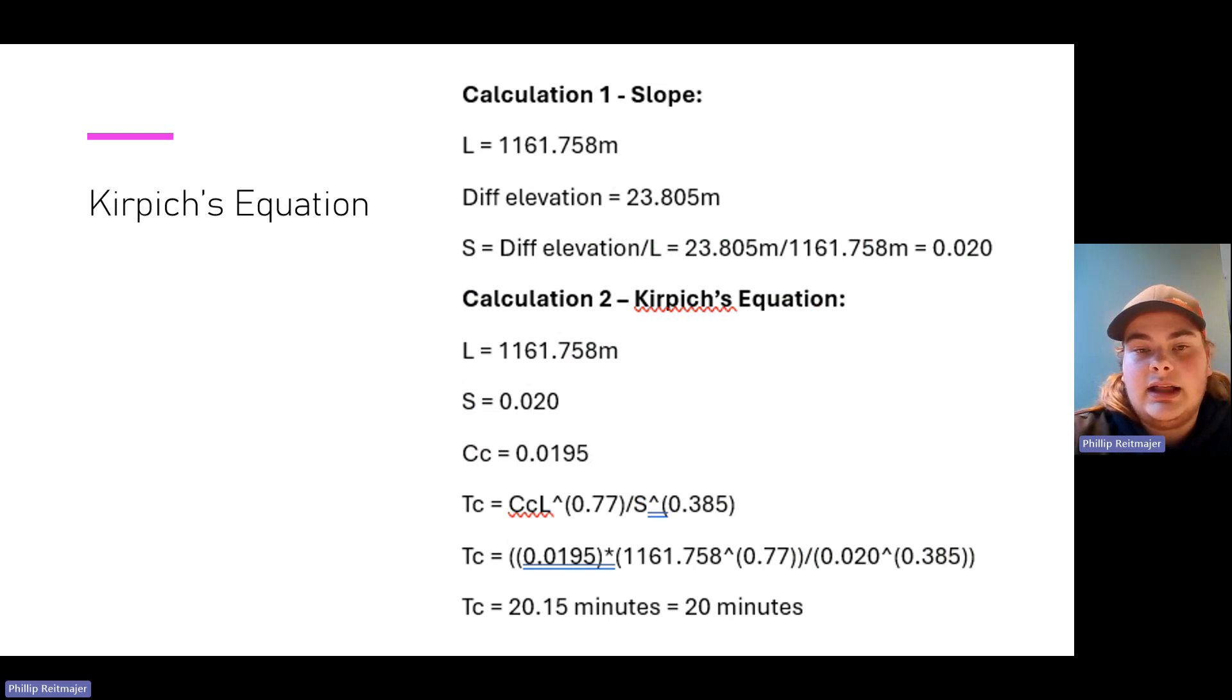Using both the elevation and length, I found the slope. Using the difference in elevation divided by the length found, I get about a 2% slope in the area. Then I plug that into Kirpich's equation using a constant of 0.0195 simply because I am using meters as my unit. This gets my time of concentration to 20.15 minutes, but we round to 20 minutes because the IDF curve has integer lines for the intensities.